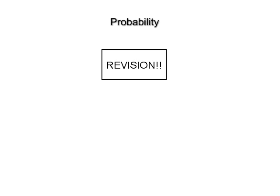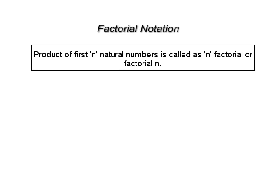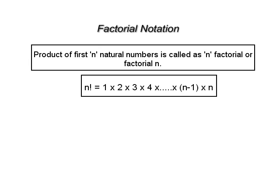Probability. Before we actually discuss probability, let us revise the preliminary part. Factorial notation. The product of first n natural numbers is called as n factorial or factorial n. Thus n factorial equals 1 × 2 × 3 × 4 up to (n−1) × n. Zero is not a natural number but 0 factorial is defined to be 1.